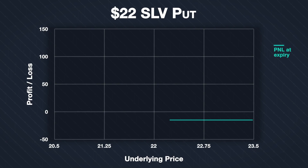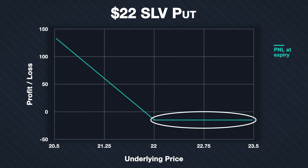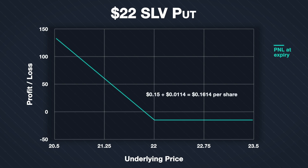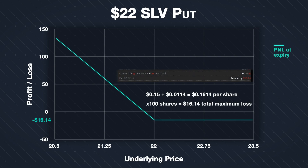Given all the parameters we just covered, this is the P&L chart at expiry for this option position. For any price of SLV above the strike price of $22, we will make the maximum possible loss. This maximum loss is limited to the premium we paid plus the fees. We paid a premium of $0.15 per share, and the fees were $0.0114 per share, giving us a total cost per share of $0.1614. As the contract multiplier is 100 and we purchased one contract, this equates to a total maximum loss of $16.14, which is the amount shown as the total cost when we placed the order on Tastyworks.